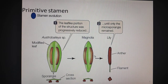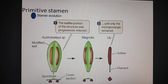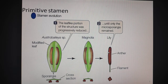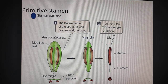Now first we will start with the primitive stamen. The stamen, which we will see the structure of today — it has a stalk called the filament, and on top of it there is an anther at its tip. If we take a cross section of the anther, we can see the four microsporangia or the pollen sacs in which the pollen grains are present.